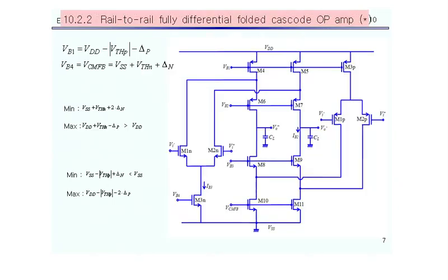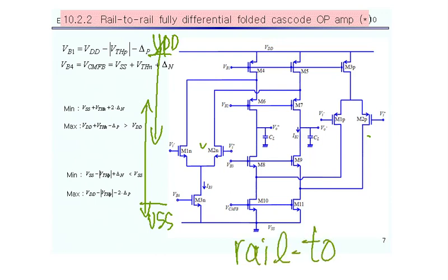The input common mode range - with NMOS, my ICMR is around that range, but with PMOS input my ICMR is around that range. So in any case I have some active input pair from VSS to VDD. This is called rail-to-rail, rail-to-rail input op-amp. My ICMR covers rail-to-rail - this rail is VSS rail to VDD rail.